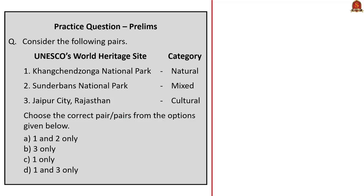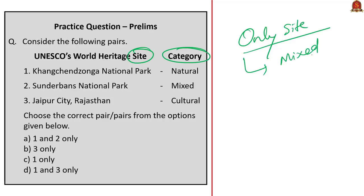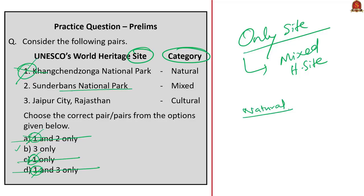The sixteenth question asks to identify correctly matched UNESCO World Heritage Site and category pairs. Kanjanjunga National Park in Sikkim is the only site in India categorized as a mixed heritage site — so the first pair is wrongly matched. Options A, C, and D all include the first pair, so they can be eliminated. Sundarbans National Park is listed as a natural heritage site, and Jaipur City in Rajasthan is classified as a cultural heritage site. The correct answer is option B: three only.